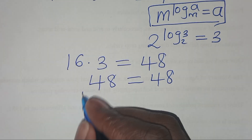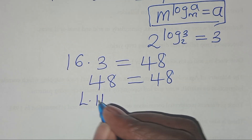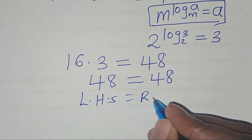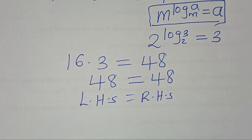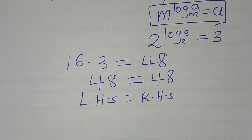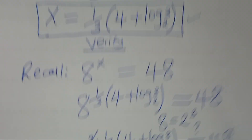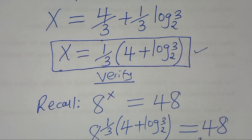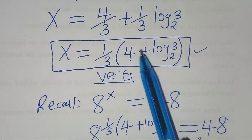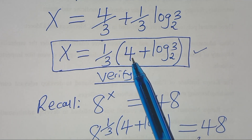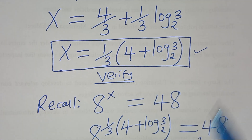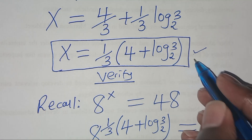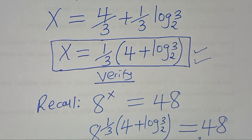So the left-hand side is equal to the right-hand side, and that clearly affirms that the value of x, which is (1/3)(4 + log base 2 of 3), actually satisfies the equation.